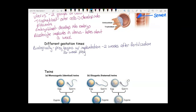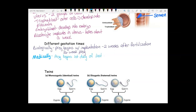Doctors use a completely different system. Most women cannot tell you the date fertilization occurred, so doctors start counting with the first day of the last period, because most women can tell them that date. So doctors actually start counting the pregnancy two weeks before fertilization even occurs, and if you use this count, pregnancy is 40 weeks.